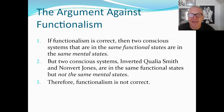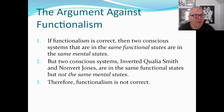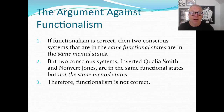Here's the argument. If functionalism is correct — if it tells us the full account of what it is to have a mind, where it's all about inputs, outputs, and internal causal states — then two conscious systems in the same functional states would be in the same mental states. That's just what functionalism claims: to have a certain kind of mental state is to be in a certain sort of functional state. But we've just conceived of two conscious systems — inverted-qualia Smith and normal Jones — who are in the same functional state but not in the same mental state.